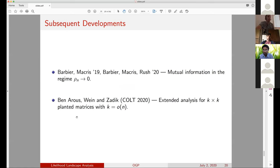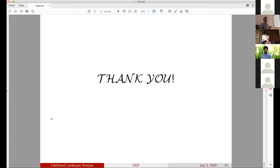So following our result, there have been subsequent developments. So there is a set of results by Barbier, Macris and Barbier, Macris and Rush, where they analyze the mutual information in this problem in the regime where rho actually goes to zero with N. And more relevant to our work is a very recent result, set of results due to Ben Arous, Wein and Zadik, who actually analyze this non-monotonic behavior in the regime where the size of the planted matrix is sublinear in the size of the ambient matrix. So thanks so much for your attention. Let me stop there. Thank you.